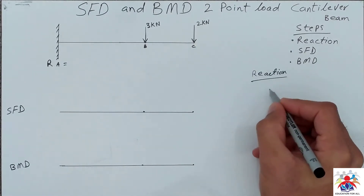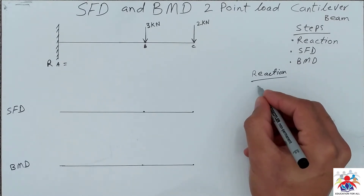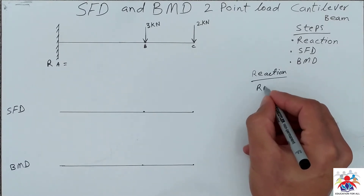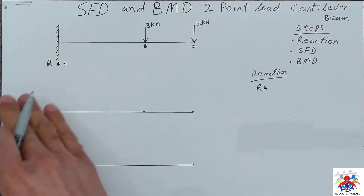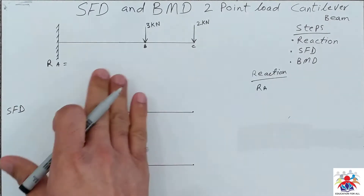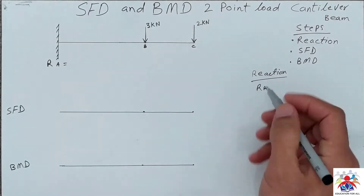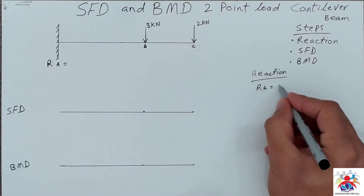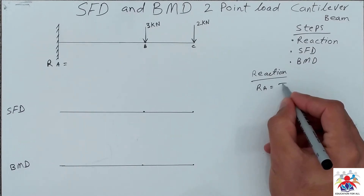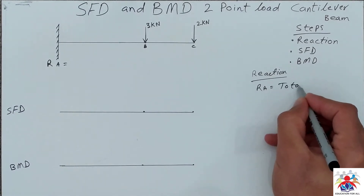The reaction for this beam — because we have only a fixed end, it is a cantilever beam and we don't have any other support. That's why we only have one end, so the reaction at RA is going to be equal to the total load only.